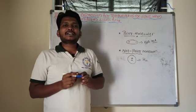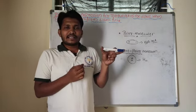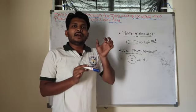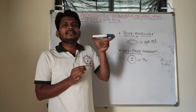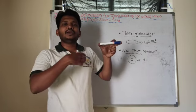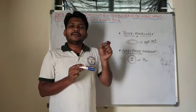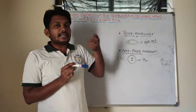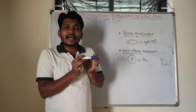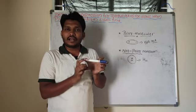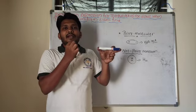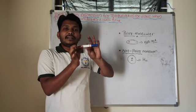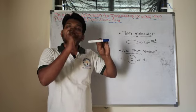In the last class we found the resultant electric field at the axial line and equatorial line. Now I would like to place this dipole in a uniform electric field. If I place the dipole in a uniform electric field, what is the force acting on this dipole? Whenever a dipole is placed in a uniform electric field, a torque is experienced by the dipole.